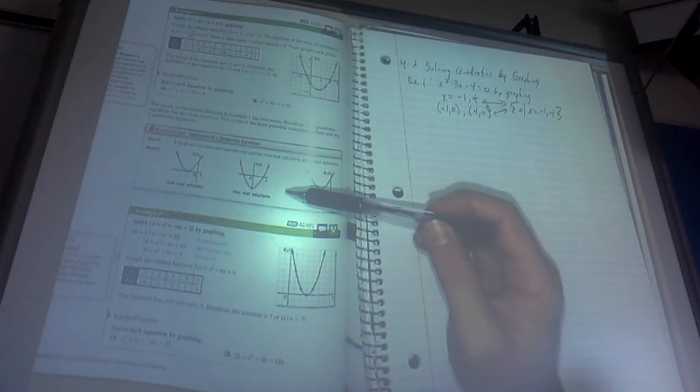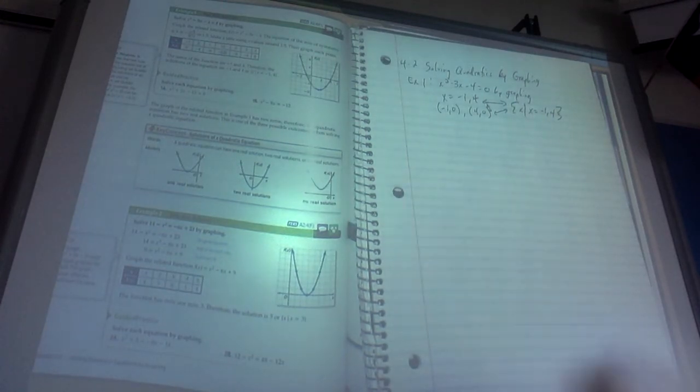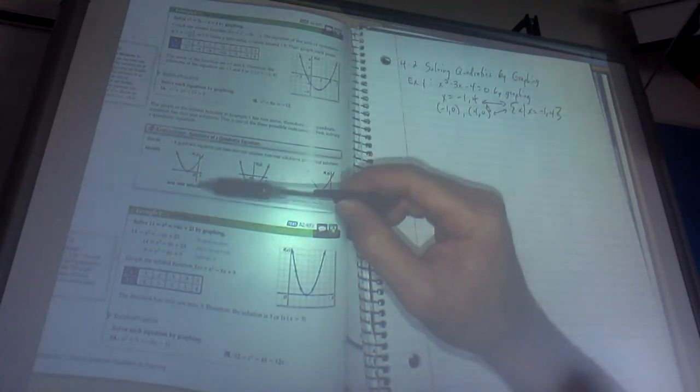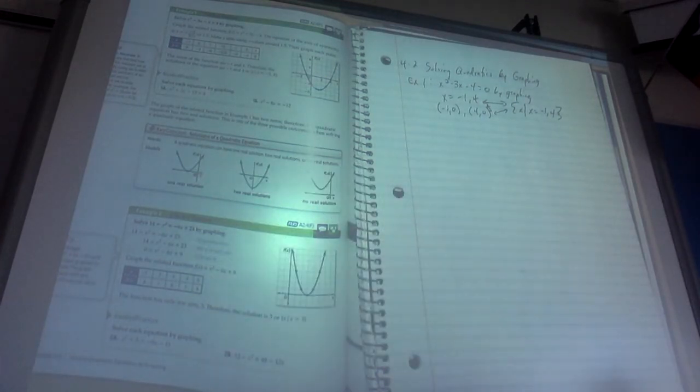It shows you an example of when you can only have one solution for a quadratic. That would be when the vertex lies on the x-axis.